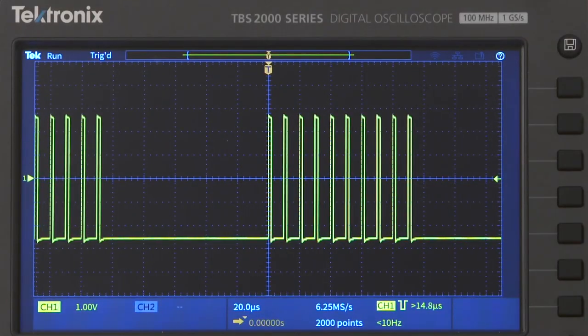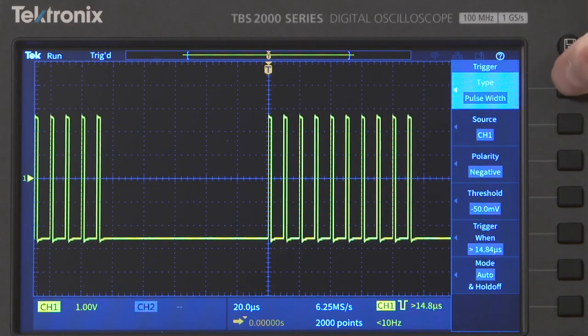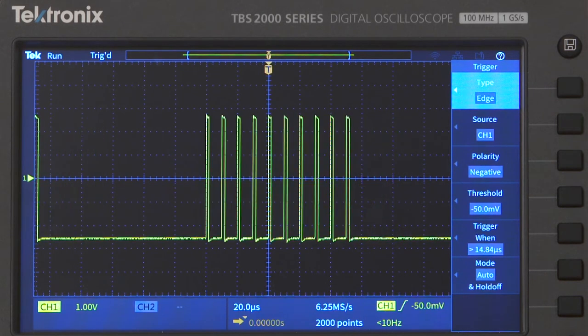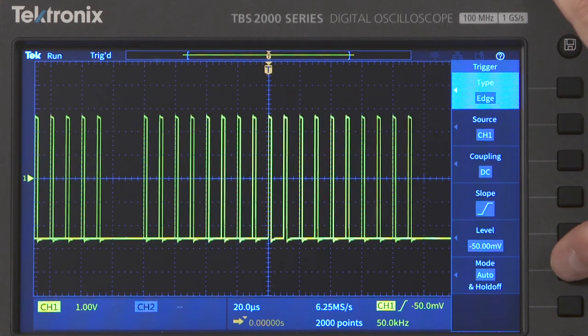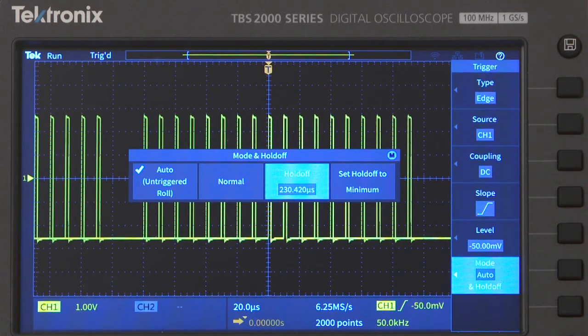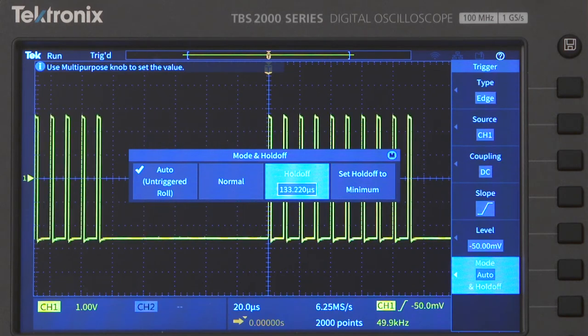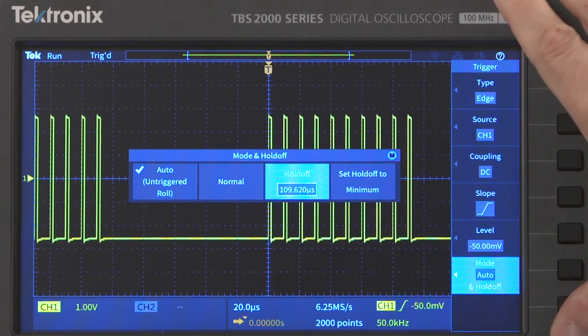Another way to trigger on digital or analog bursts is to use our old friend edge triggering with trigger holdoff. I'll set the holdoff control to hold off the trigger for the duration of the 100 microsecond clock burst. This approach also triggers the scope on the dead time before the burst.